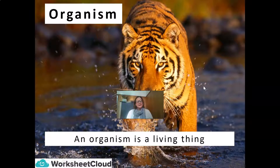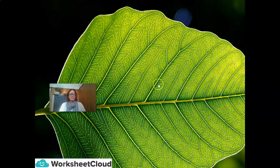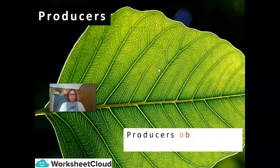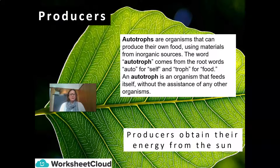An organism is a living thing. Let's recap some basics again from Grade 6. We know about a producer, and we know that producers obtain their energy from the sun. Producers are autotrophs — organisms that can produce their own food using materials from inorganic sources. The word autotroph comes from the root words auto for self and troph for food. So an autotroph is an organism that feeds itself without the assistance of any other organism.